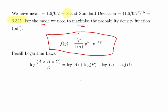To make life simpler, rather than maximizing the PDF directly, we can instead maximize its logarithm, find the derivative, and set that equal to zero. That's the tactic we'll use with this complicated-looking expression.